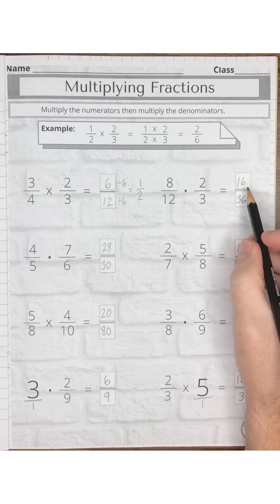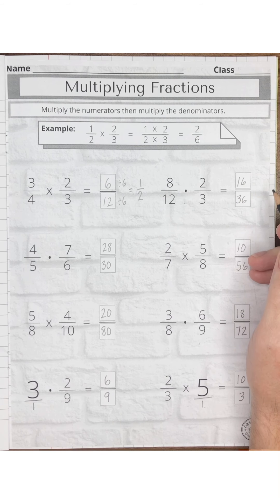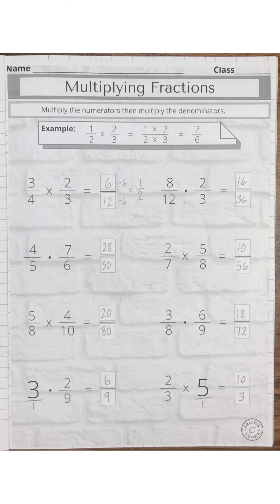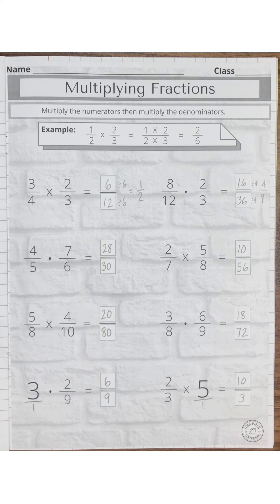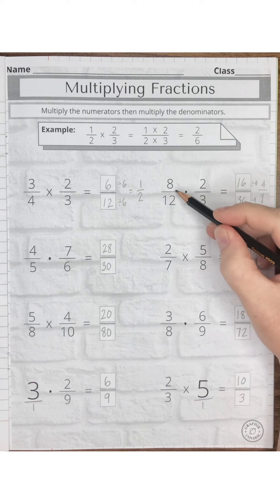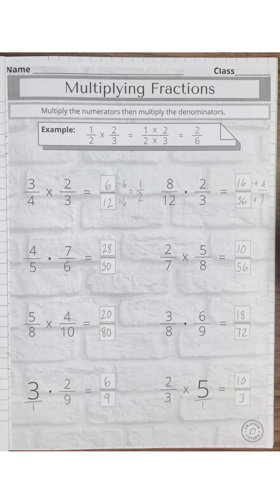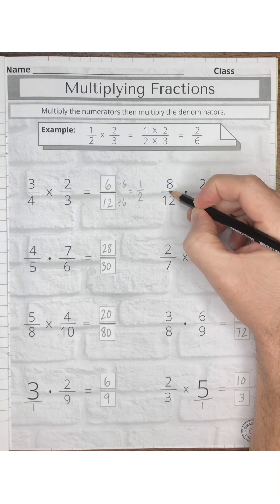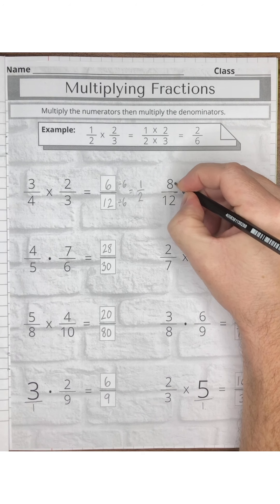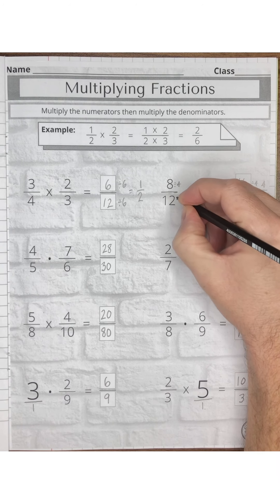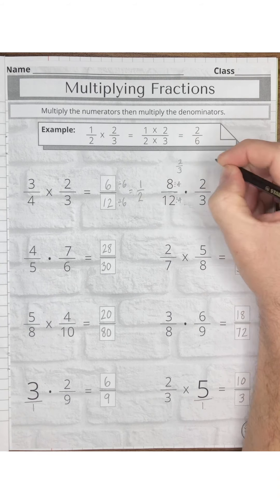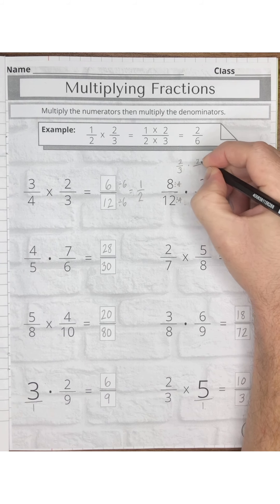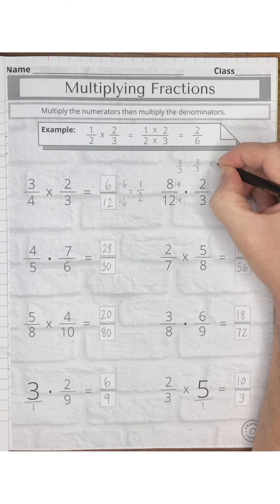When we simplify 16 over 36, we can divide it by 4, and we get four-ninths. As mentioned, we can also reduce fractions first and then multiply. If we reduce eight-twelfths by finding the GCF of 4, we get two-thirds. Then we multiply two-thirds by two-thirds and we get four-ninths.